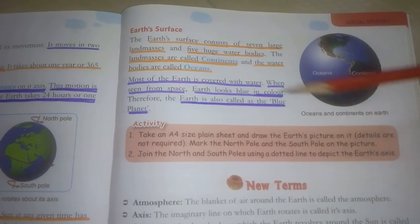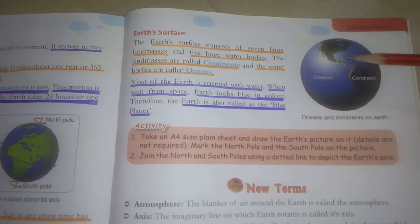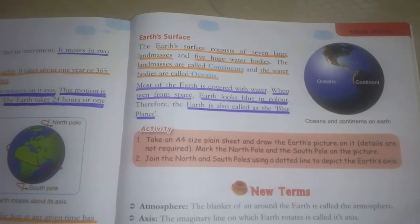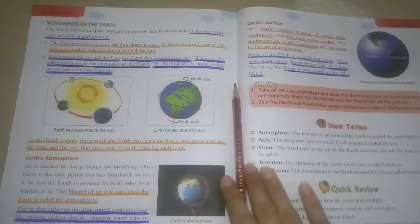Therefore, the earth is called the blue planet. That's why we call earth the blue planet. I hope this chapter is clear to you. Thank you.